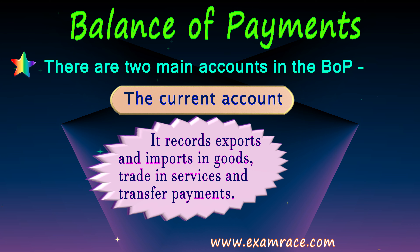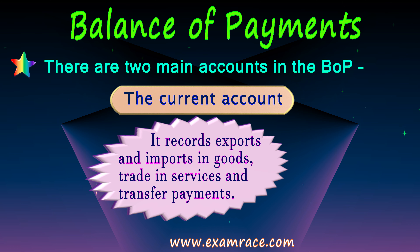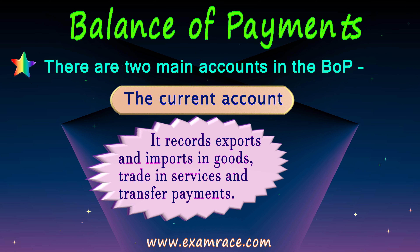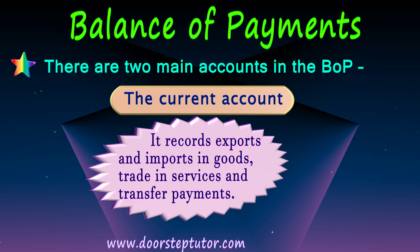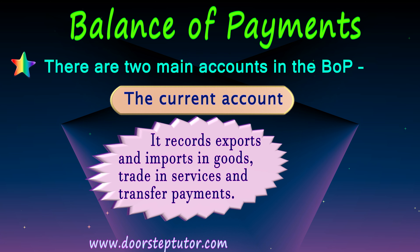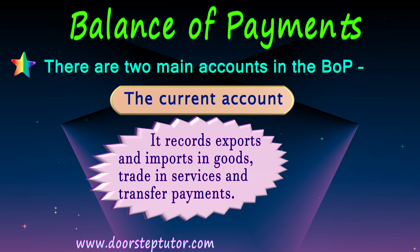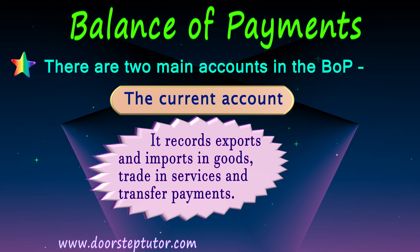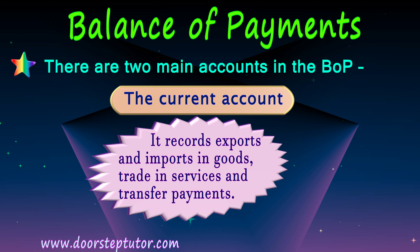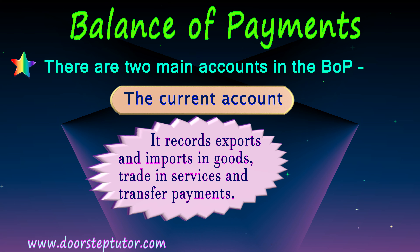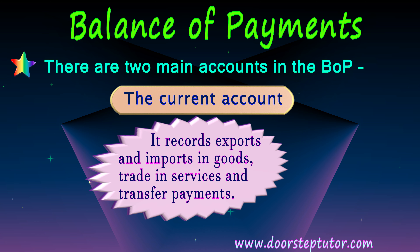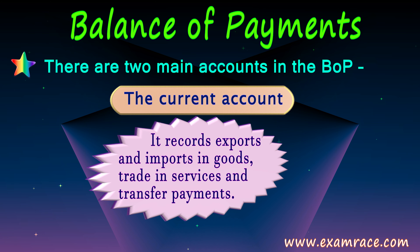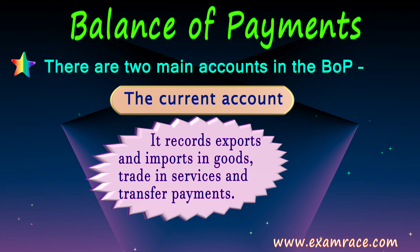Exports and imports in goods are also known as merchandise trade or trade in visible items, whereas exports and imports of services — like telemedicine services — are recorded as trade in invisible items. When trading in goods takes place it is known as trade in visible items. All of them when merged together form the current account. It also includes transfer payments, which are unilateral payments such as gifts, remittances, and donations.